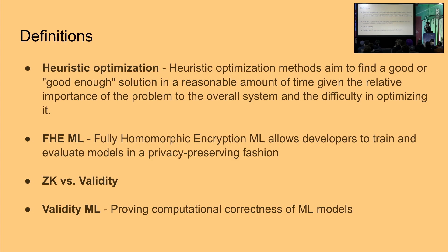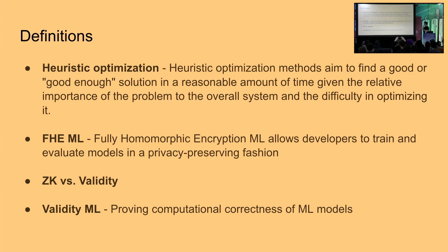I'll also talk about the difference between zero-knowledge and validity proofs. Many people are conflating the two concepts. When people talk about zero-knowledge rollups, they're not really talking about zero-knowledge rollups — they're talking about validity rollups, creating proofs that some state transition happened correctly without hiding parts of that transition. Think StarkNet, Scroll, or any other ZK rollup. If you're actually hiding computation — think Aztec with private transfers where you don't see balances, or Zcash — that's actually zero-knowledge cryptography, not validity. Validity ML is just proving computation happened without hiding any of it.